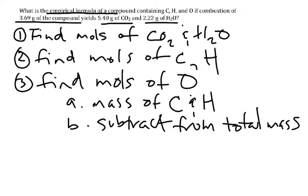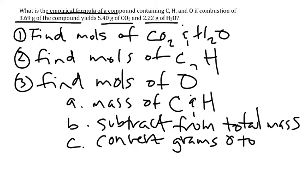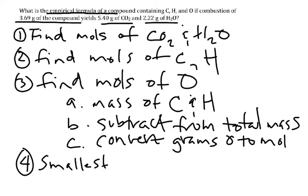In this problem, the initial mass is 3.69 grams. After you subtract from the total mass, you'll find the grams of oxygen. Then you need to convert the grams of oxygen to moles using the molar mass of oxygen. Once you do that, you have the moles of oxygen, hydrogen, and carbon, and then you can start looking at the empirical formula. You identify the smallest number of moles, divide each element by that, and that gives you your empirical formula.